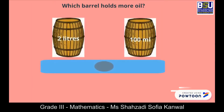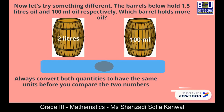Now let's try something different. The barrels below hold 1.5 liters of oil and 100 ml of oil respectively. Which barrel holds more oil? The one on the right — 100 is the larger number than 2. That's not correct, because you always have to convert both quantities to have the same units before you compare the two numbers.